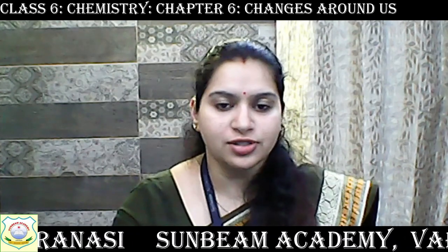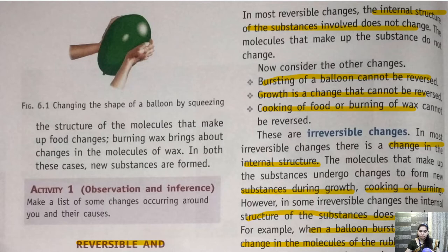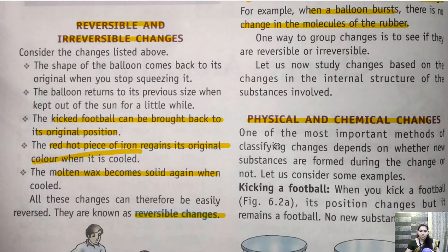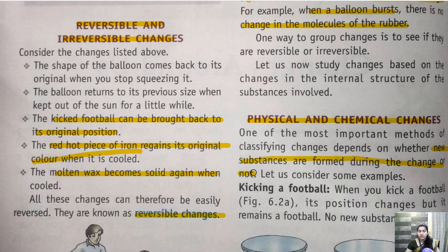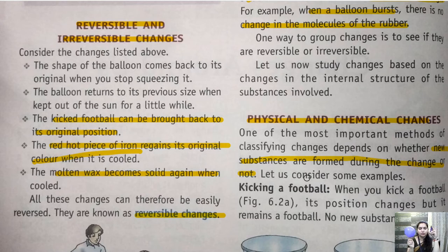Let's see what is written in the chapter about physical and chemical changes. One of the most important methods of classifying changes depends on whether new substances are formed during the change or not. If new substances are formed, it is a chemical change. If no new substances are formed, it is a physical change. Now quickly tell me: this balloon — is the change between these two balloons physical or chemical? It is a physical change. Very correct!